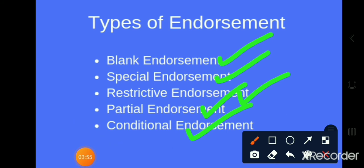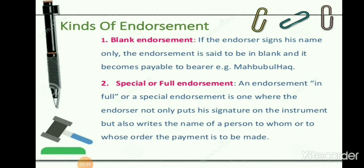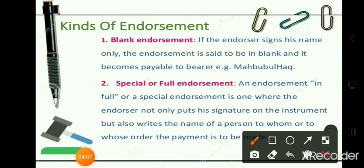Now we will discuss these one by one. The very first one is blank endorsement. If the endorser signs his name only, the endorsement is said to be in blank and the instrument becomes payable to the bearer.